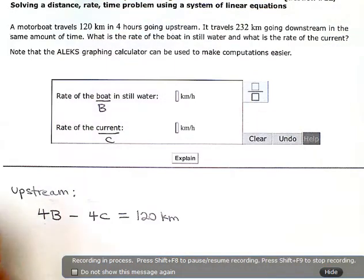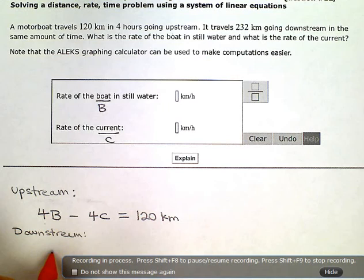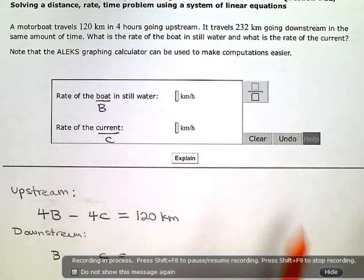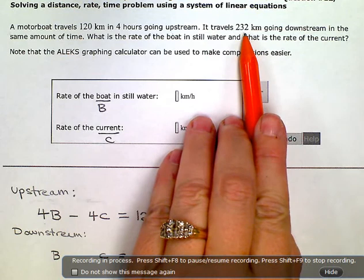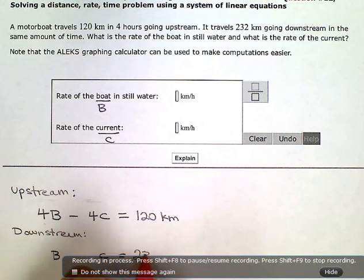Now when we go downstream, I still have a boat, I still have the current. And we're going to go 232 kilometers downstream. So this number over here is 232.